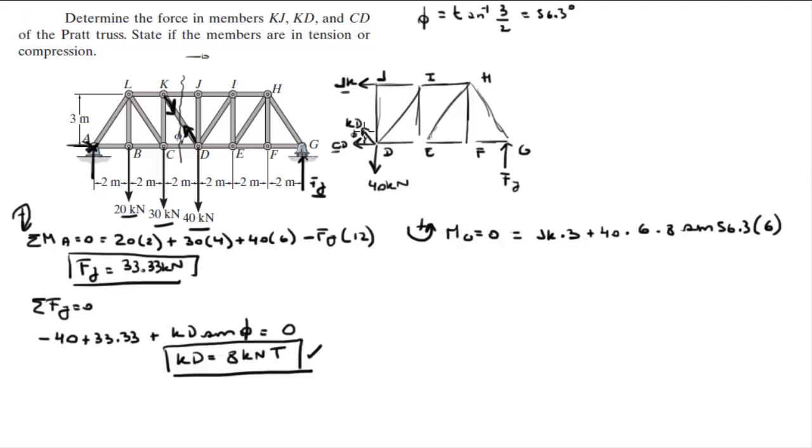And it is equal to Jk times 3 plus 40 times 6 minus 8 sine of 56.3 times 6. Because you know that the only component of these Kd forces creating a moment about G is the vertical component. Horizontal is not creating any moment. So this is a minus.